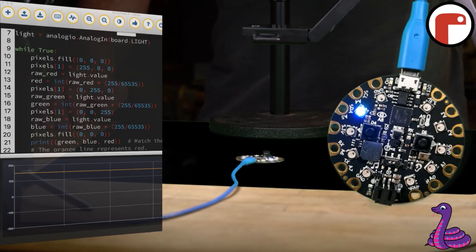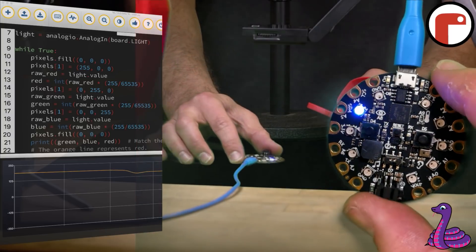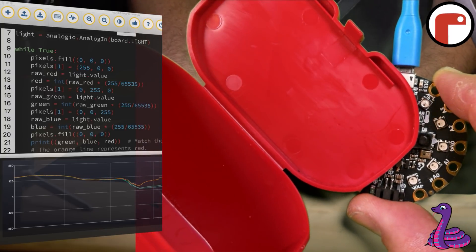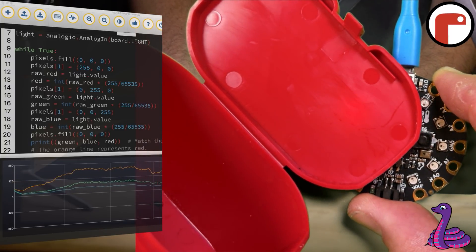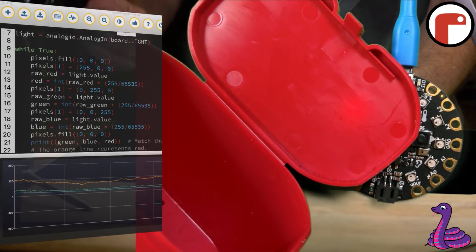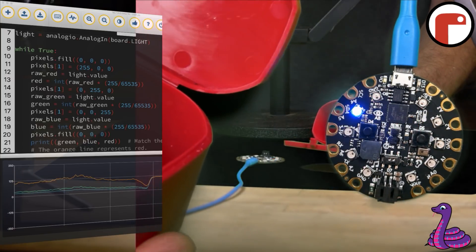Here's our color detector in action. As we hold up this red box in front of the sensor, the NeoPixel flashes red, green, and then blue. The box reflects the red light, so the sensor detects a high brightness value.